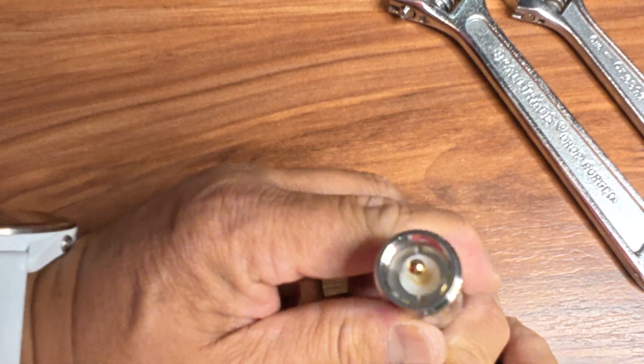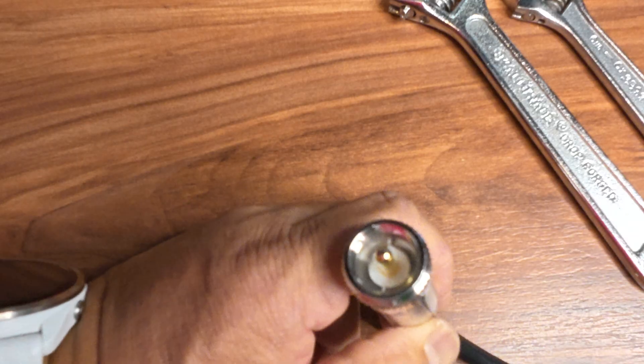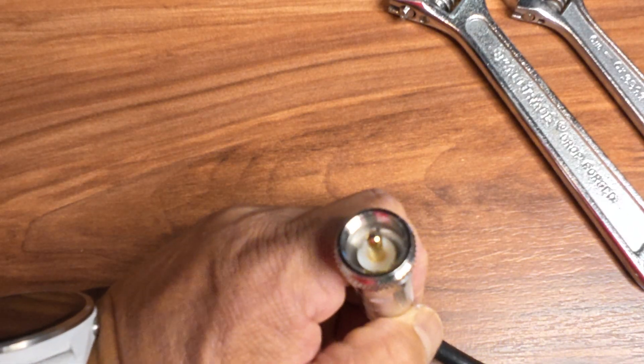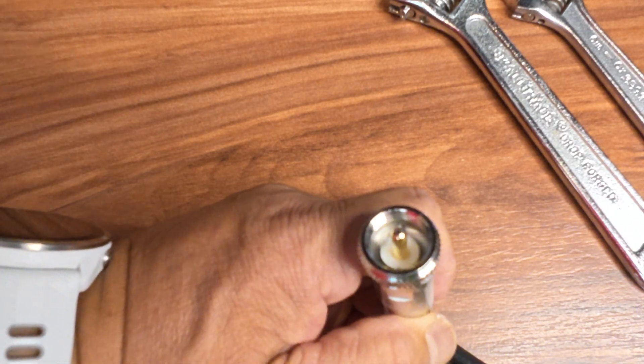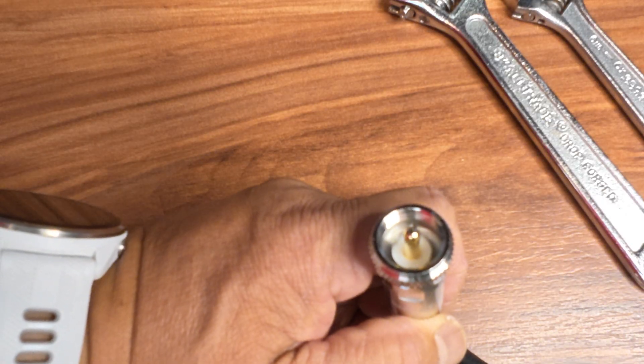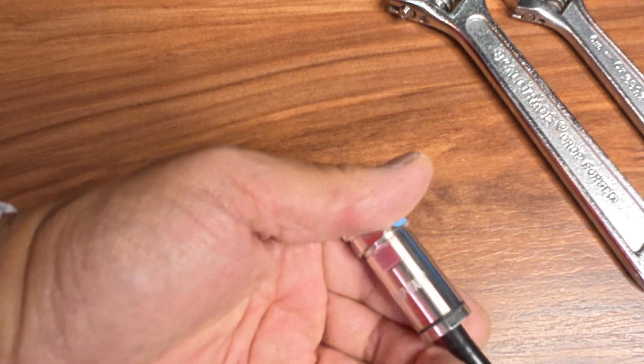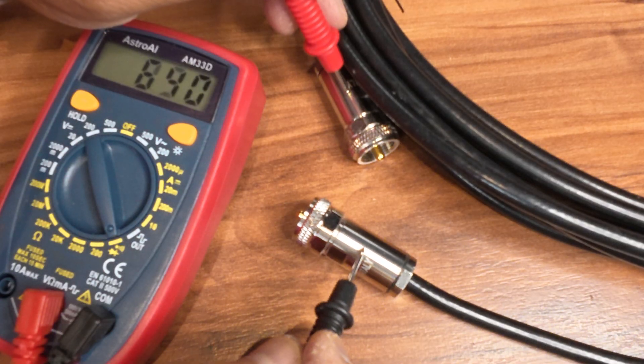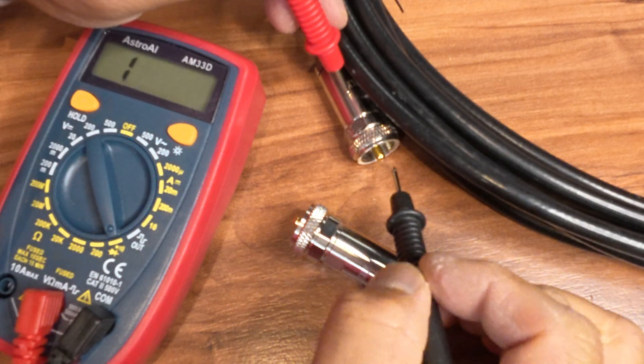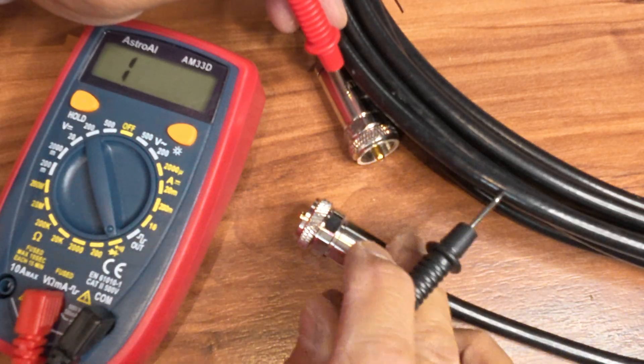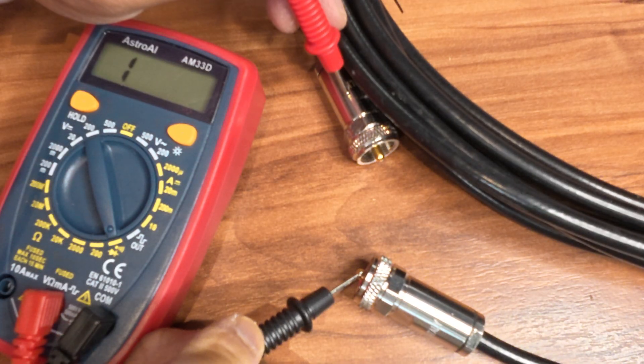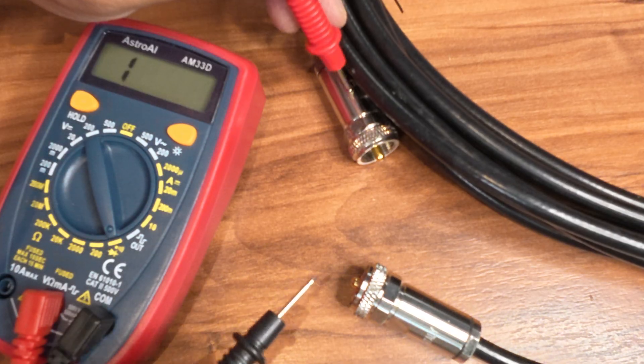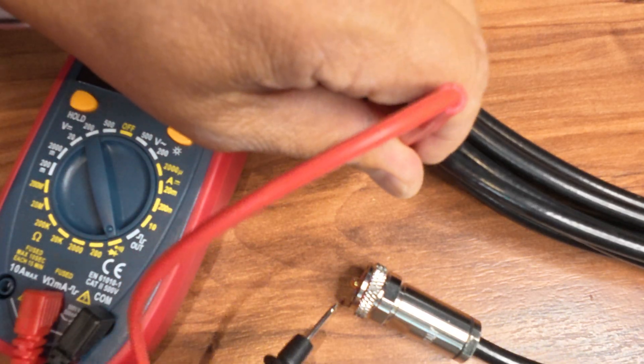I'm going to test the connectivity. And make sure the center has a constant connection to the other end. And also, they're not shorted out. All right, the shields. The shield and the center conductor. And both center conductors.